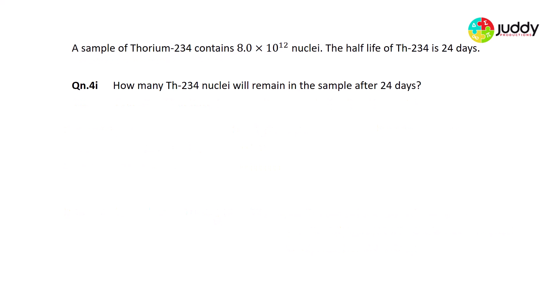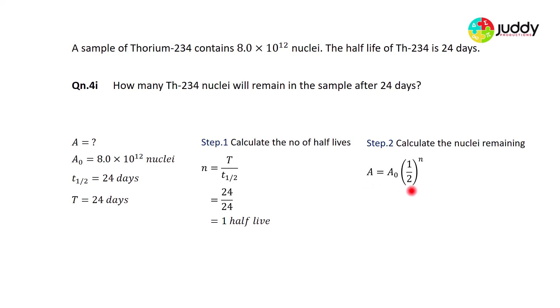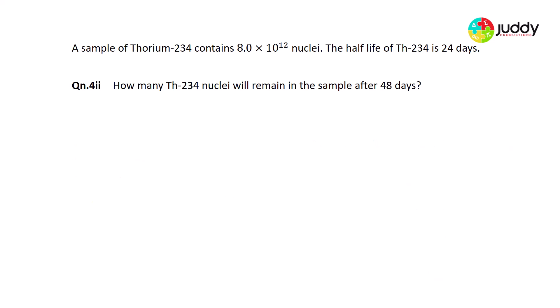A sample of Thorium-234 contains 8.0 × 10^12 nuclei with a half-life of 24 days. Question 4.1: how many Thorium-234 nuclei remain after 24 days? Since 24 days is one half-life, logically half remain. Step 1: number of half-lives = 24 ÷ 24 = 1. Step 2: nuclei remaining = 8.0 × 10^12 × (½)^1 = 4.0 × 10^12 nuclei.